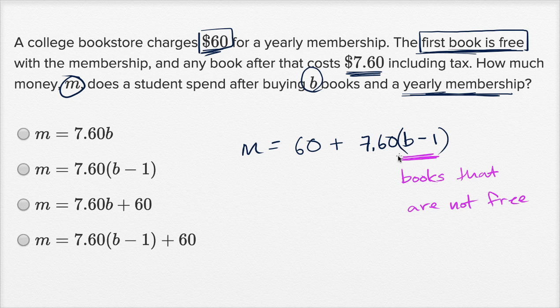The first book is free, and every one after that you would pay for, and this makes sense. If you buy, if B is two, two minus one, you're going to pay for one book. If B is ten, that means you're only going to have to pay for nine books. Nine times 7.60 plus the membership.